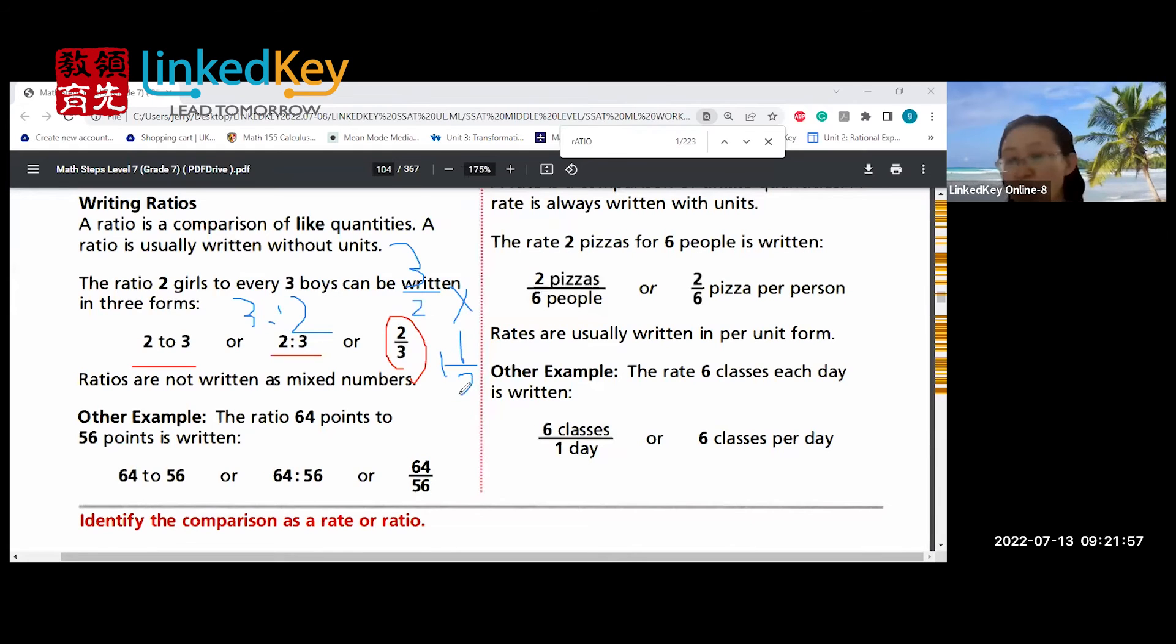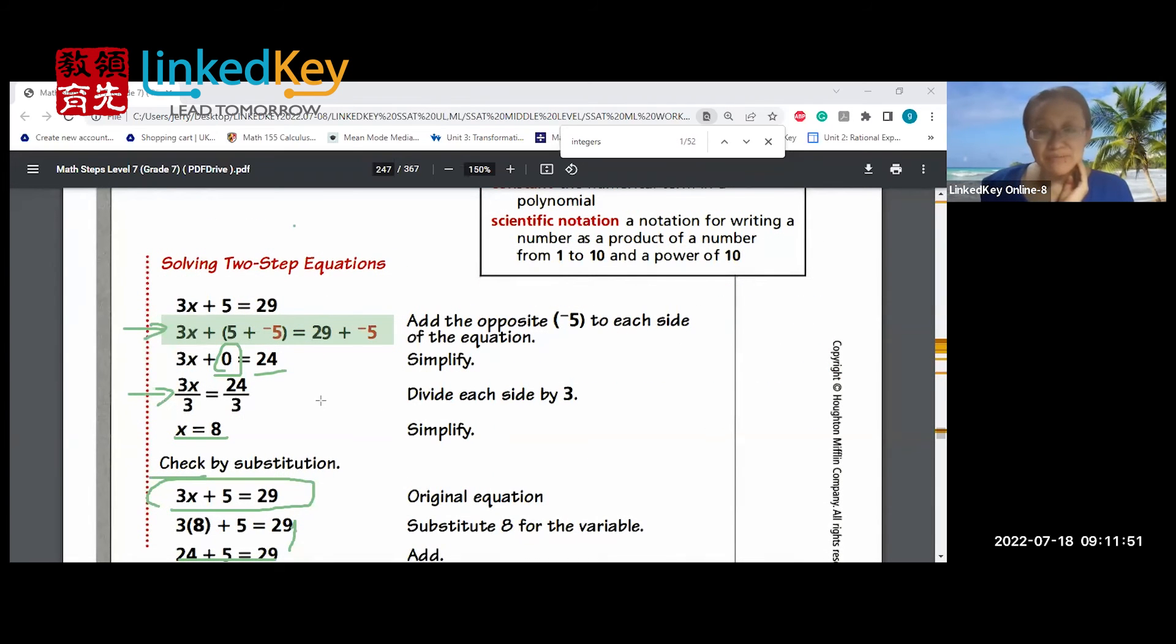It is one and a half. No, no mixed numbers, only improper fractions. Important steps of it. So you can see on the right side it says add opposite, a number that simplifies divided by coefficient, simplify, you have a result. Did you get it? That is two steps.